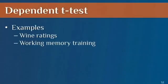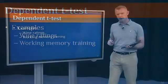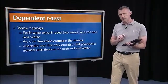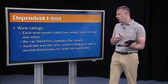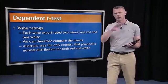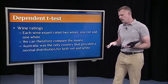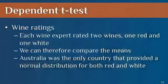To illustrate dependent t-test, I'm going to walk you through two examples that we've used already in the course. First, wine ratings, and then the working memory training experiment. Let's look back at the wine ratings. If you remember, we had wine experts from four different countries. Each wine expert rated two wines, one red, one white. Since we have two scores from each individual, we could do a dependent t-test to see if there's a significant difference in the mean ratings of red versus white.